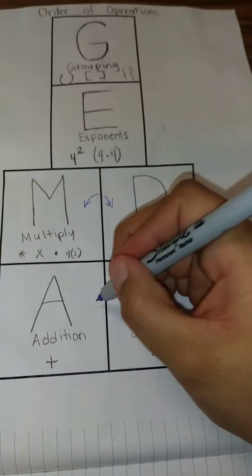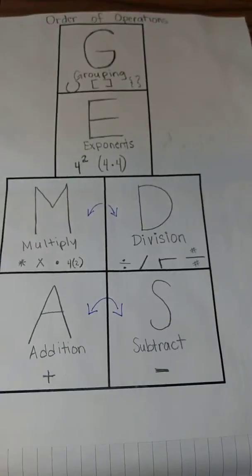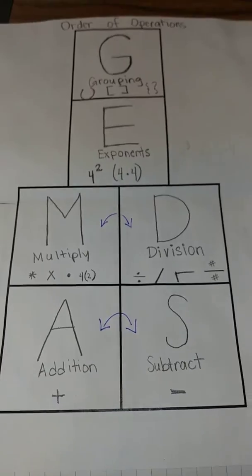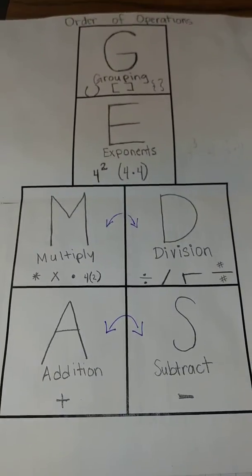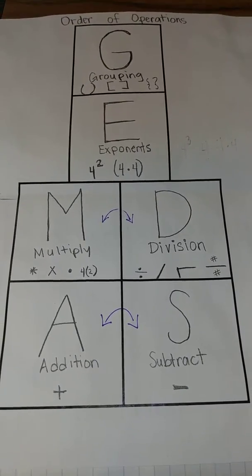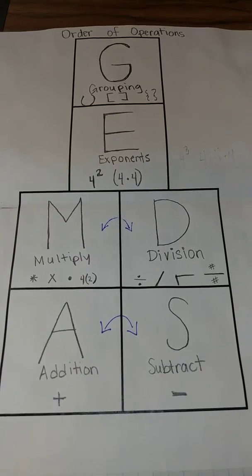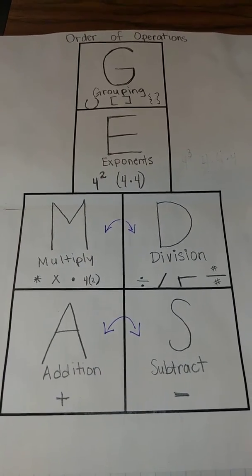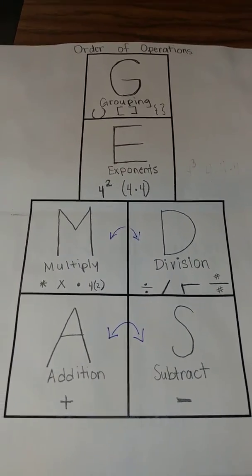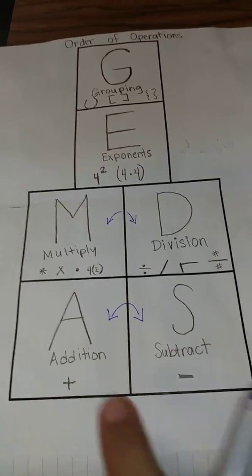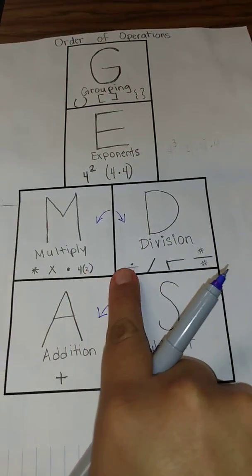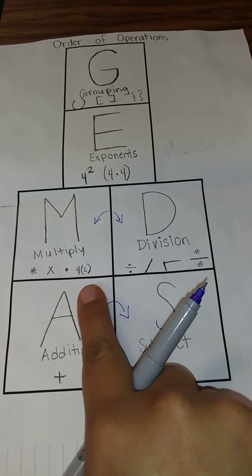And then again, addition and subtraction, whichever comes first. Every student should have a model like this, a graphic organizer that would help them. A lot of students used color. And we also stopped to discuss some of the symbols used for division and some of the symbols used for multiplication.